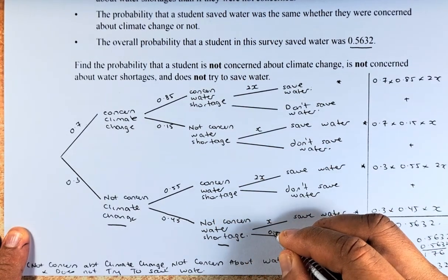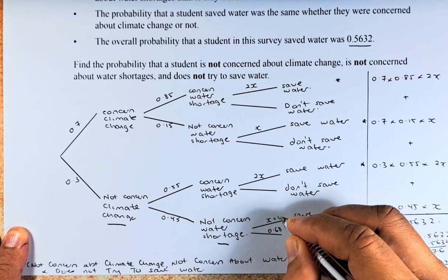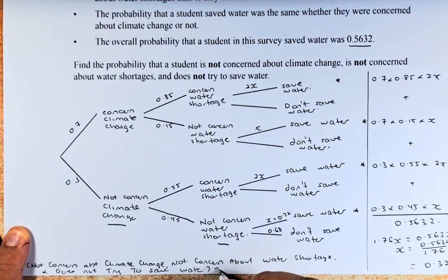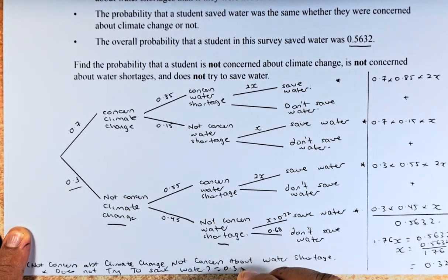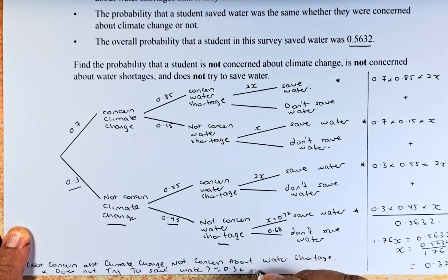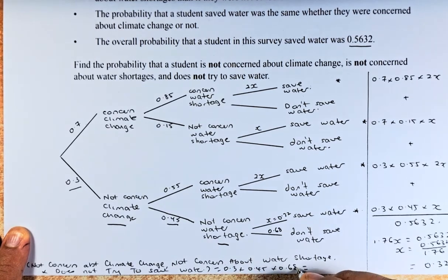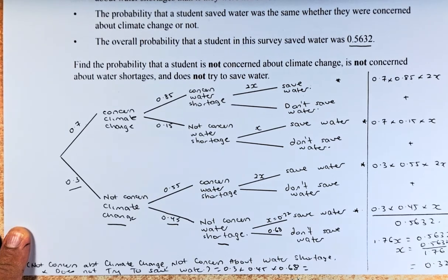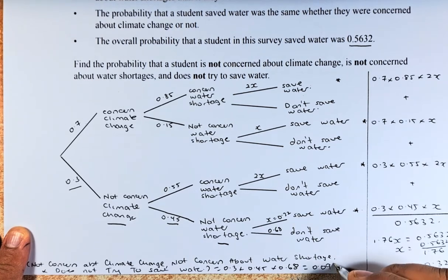So to calculate that probability, we just take 0.3 multiplied by 0.45 multiplied by 0.68. Put it in your calculator and the final answer is going to be 0.0918.